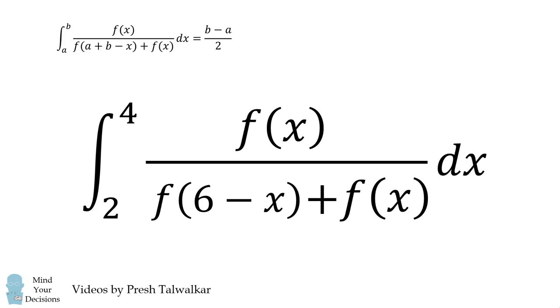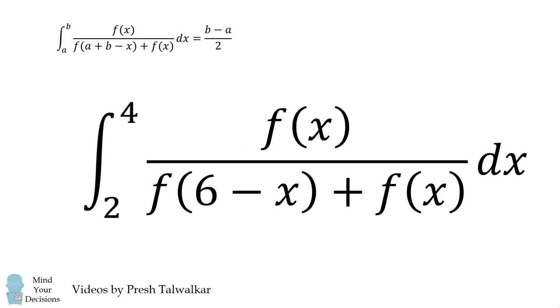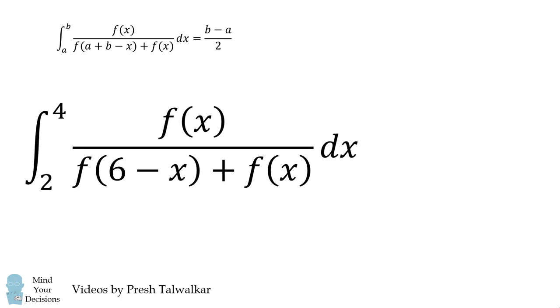Now square root of 6 minus x will exactly be equal to f of a plus b minus x. This integral therefore follows this formula exactly, and we can then evaluate it as b minus a over 2.